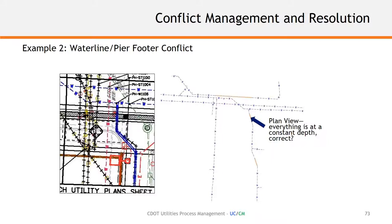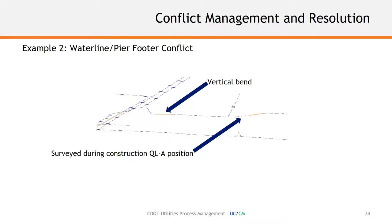Our construction management group on site recognized there was going to be a vertical and horizontal conflict with this waterline and the future footer that was too far out from being constructed. The construction management and utility coordination team decided to adjust the line vertically — leave it horizontally where it was, put an encasement in. The orange line shows that encasement under the footer so that if the waterline were to break, we'd have some protection under that footer.